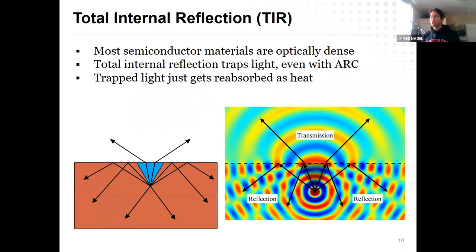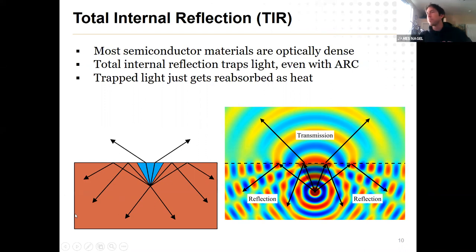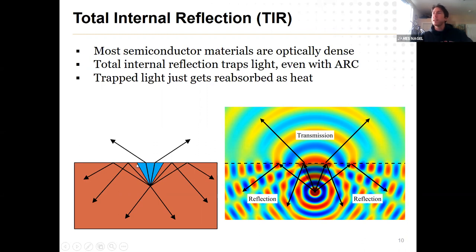Here's a nice depiction of that escape cone. For an index of refraction around three, the escape cone is typically on the order of about 15 to 20 degrees. That means any rays coming outside the escape cone just bounce back down with perfect total reflection — nothing gets out. Inside the escape cone, you have a chance for some of that energy to leak out. A good anti-reflective coating will minimize reflections within the cone, but not outside it.